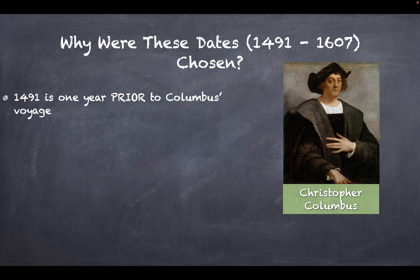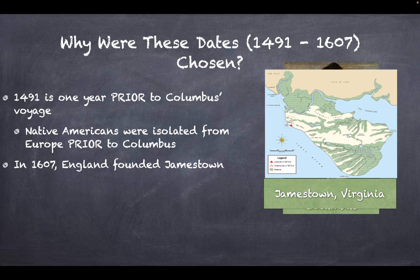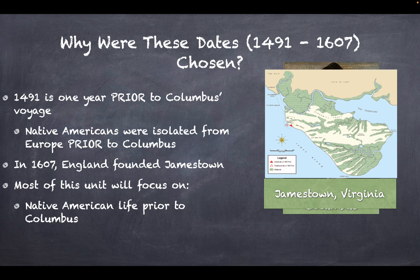Why were the dates 1491 to 1607 chosen? 1491 is one year prior to Columbus's voyage to the Americas — this is what life was like for Native Americans before European contact. In 1607, England founded Jamestown, the first permanent English settlement in the New World. Most of this unit will focus on Native American life prior to Columbus as well as Spanish colonization of the Americas.